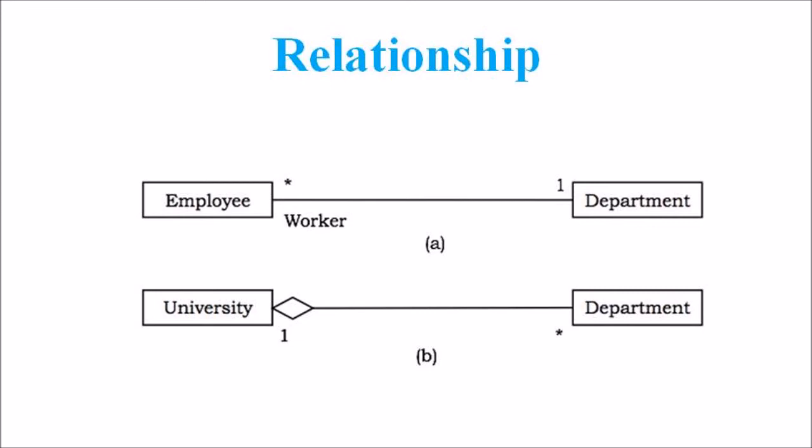The first figure shows an association between two classes, department and employee, wherein a department may have a number of employees working in it. Worker is the role name. The one alongside the department and the asterisk alongside the employee depicts that the cardinality ratio is one to many, i.e., one department may have many workers. In the reverse order, many workers are associated to one department.